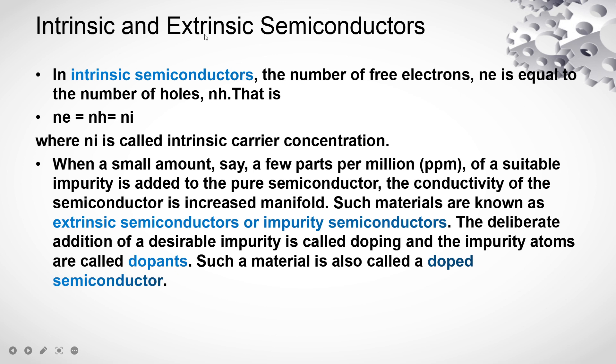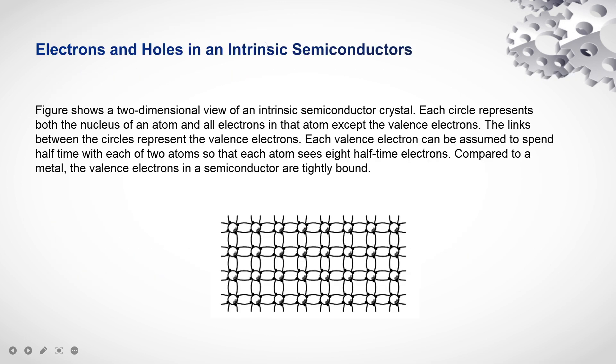There are two types of semiconductors: intrinsic and extrinsic. Intrinsic are pure semiconductors, they are not having any impurities. Whereas extrinsic, external impurities are added and they are also called as doped semiconductors.